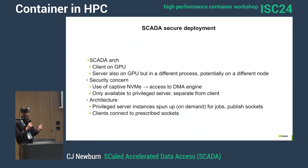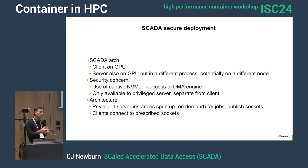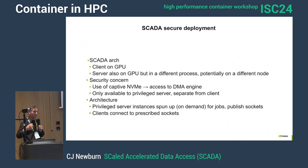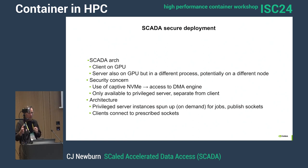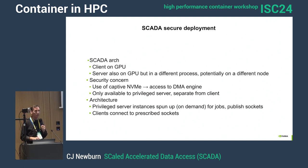The architecture has a client on a GPU and a server in a separate process — possibly a different GPU. The security concern is that an NVMe has a DMA engine, and you can use that to scribble all over memory, so you can't give applications direct access to it. The server needs to be more privileged to handle that. Privileged server instances are spun up for each job, they publish a socket, and then the client connects to those prescribed sockets.